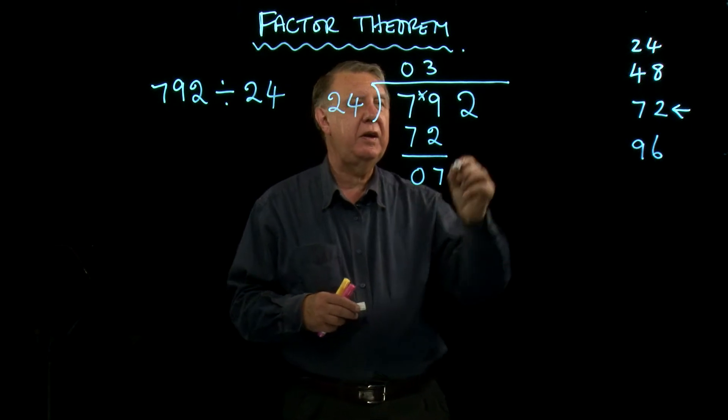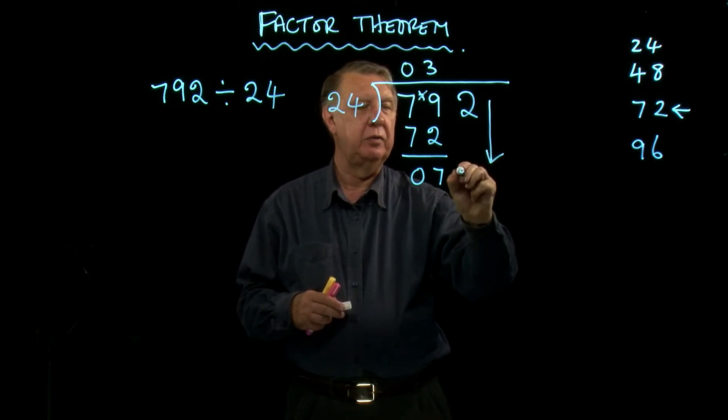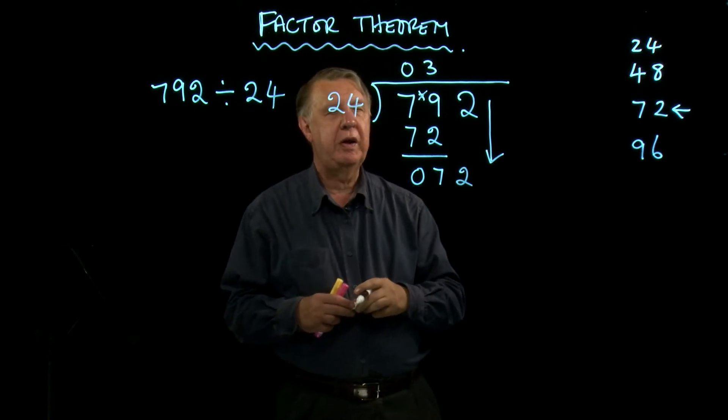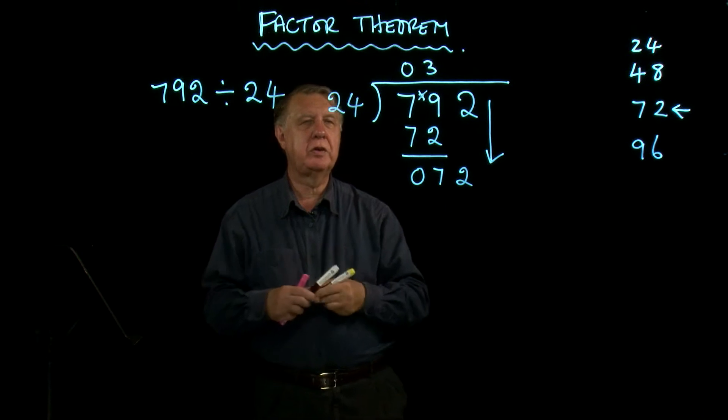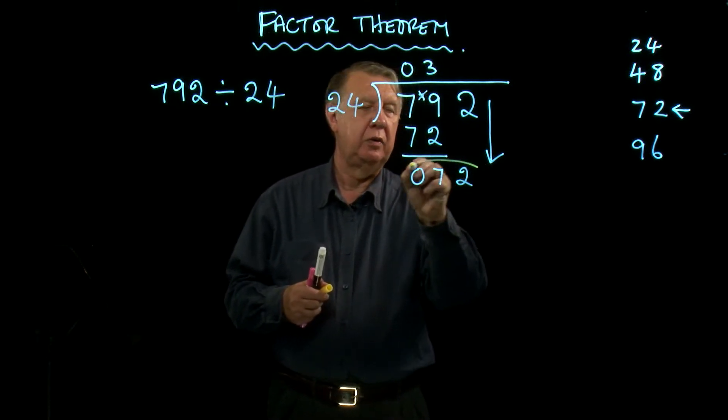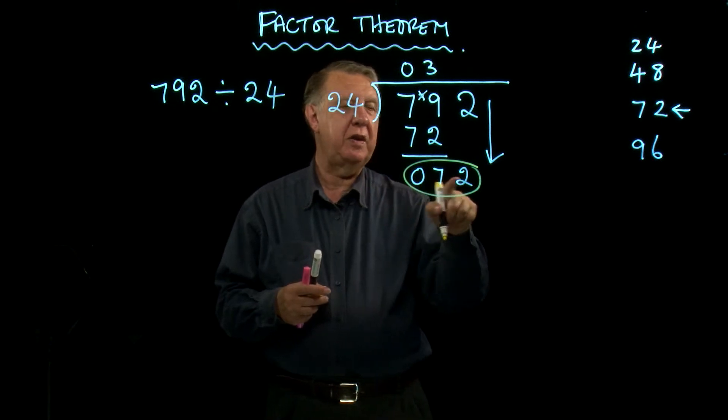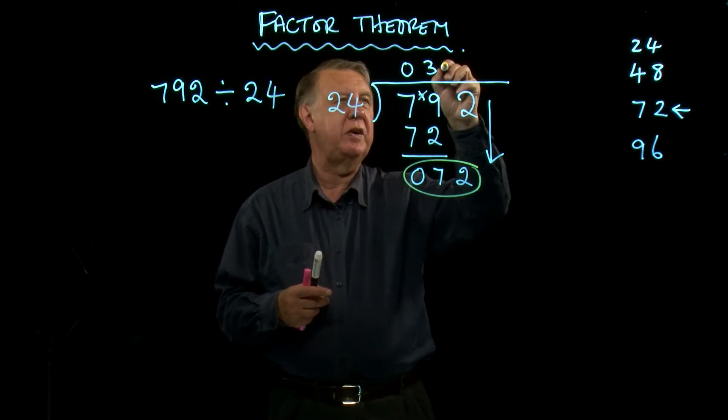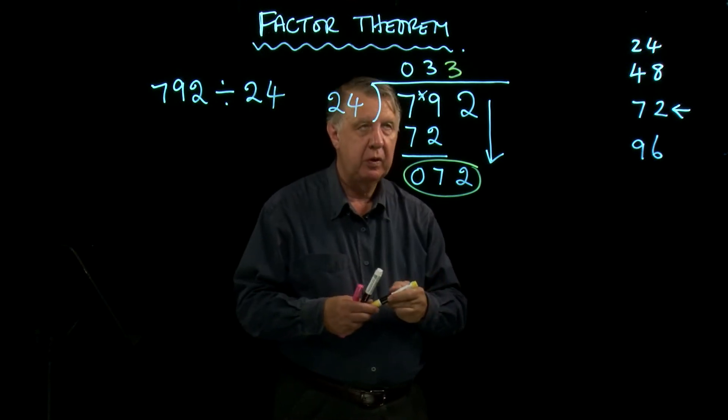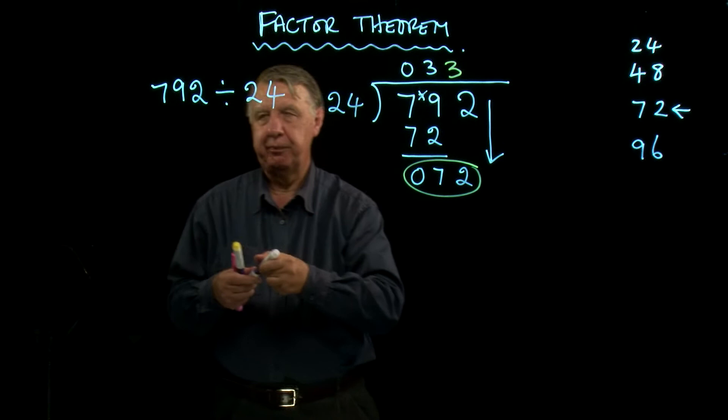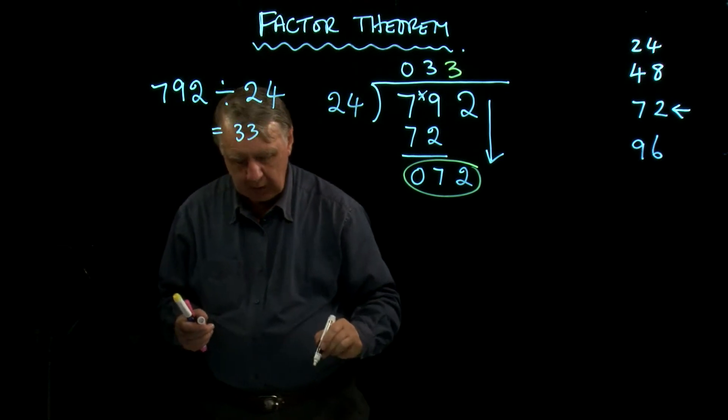At this point, anything else that's left here is moved down. So we now have 72. And we focus on this. So 24 goes into 72, and of course we know that it's exactly 3. So the answer is 33.